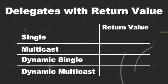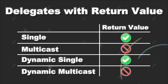First, the return value can only be used by the single delegate types, so not by the multicast delegates. This makes sense since for multicast delegates you would end up having a single return value for multiple possible functions that are bound to the delegate.